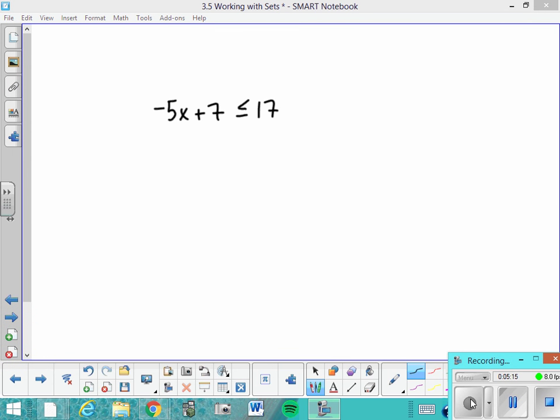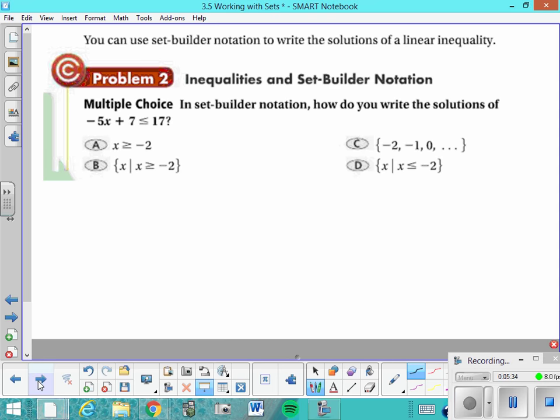You can also use set notation to express the solutions for an inequality like this. Copy this down and go ahead and solve it the way you normally do. Hopefully you've got the answer, X is greater than or equal to negative 2, and you remember to flip your sign, since you divided by a negative right here. Let's remember that X is greater than or equal to negative 2, and this question is asking, in set builder notation, how do you write the solutions of this inequality we just solved? We just solved that, and I believe we got the answer as X is greater than or equal to negative 2, so which one would be the correct answer in set builder notation?